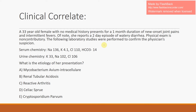Now that we've gone over the primary causes of urine anion gap being positive versus negative, let's go over this USMLE-style question. Take a moment to read it, and after reading it we will go over it together.